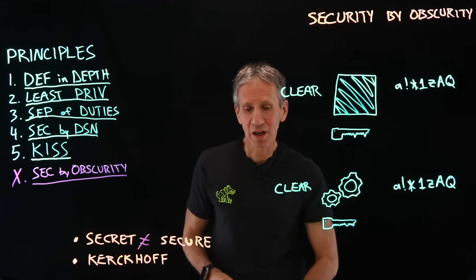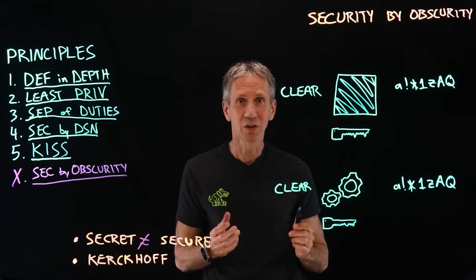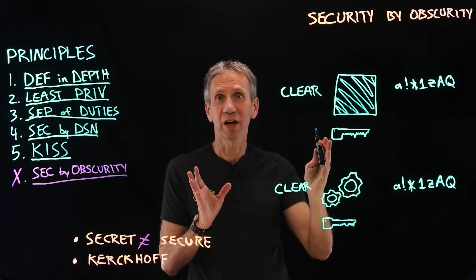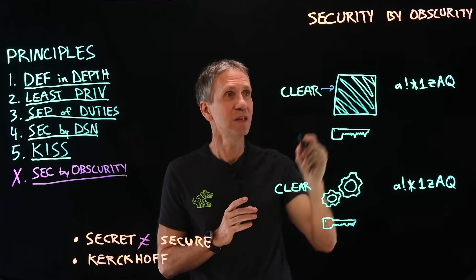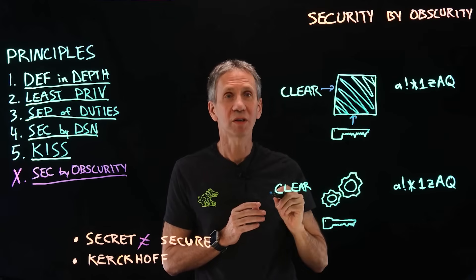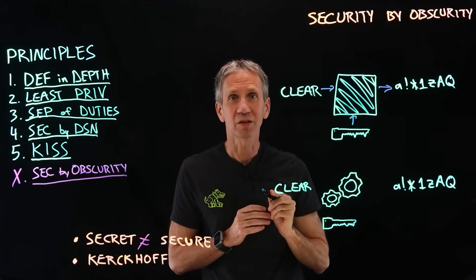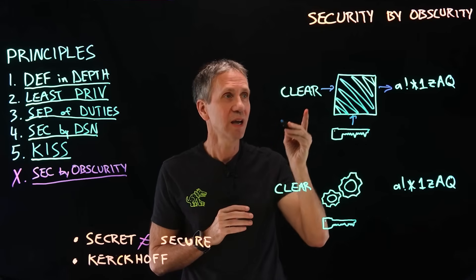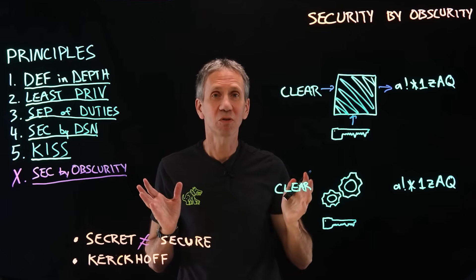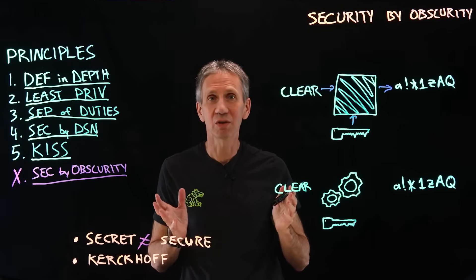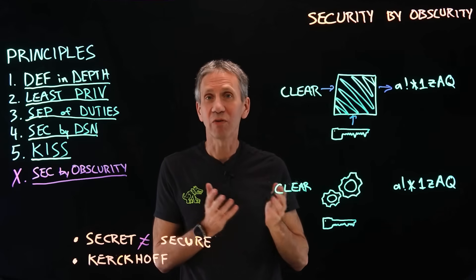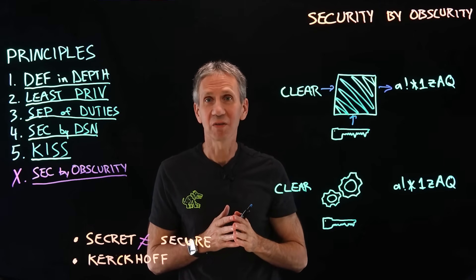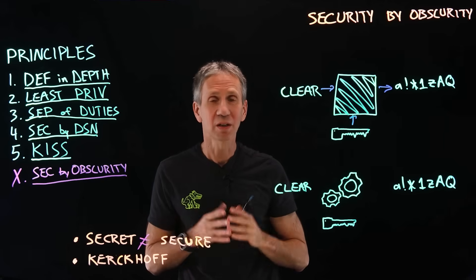When you hear someone say they've invented a proprietary crypto system where you feed clear text and a key into their algorithm to produce cipher text — run, not walk, but run away. The problem is it's a black box; you can't see how it works. And if the inventor says it's unbreakable because they've been hacking at it for weeks, months, years — all that means is the inventor couldn't find a way to break it. That's not the same as the whole world, given access, being unable to break it. Given time, they will, even if it's a black box. History has shown that.